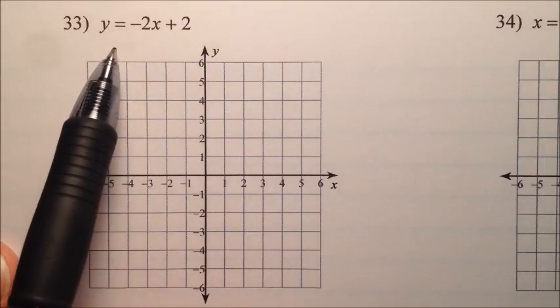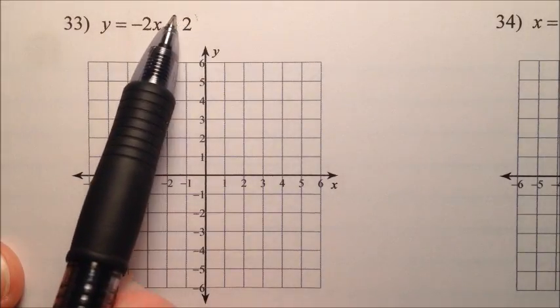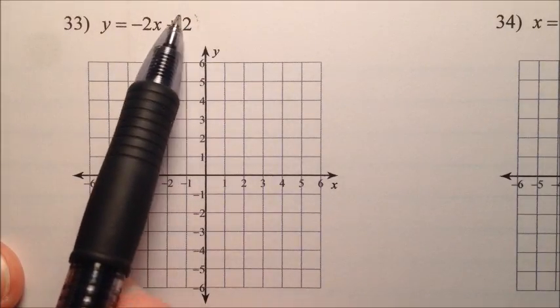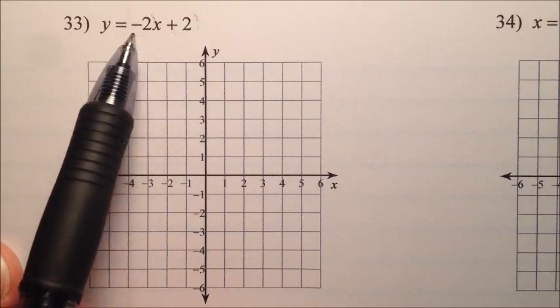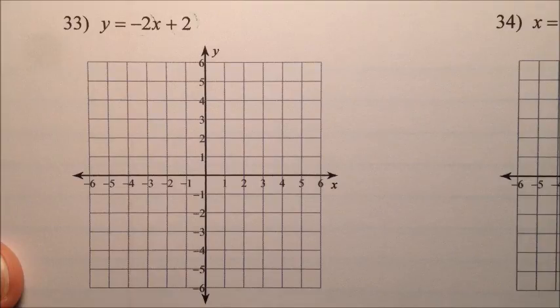In order to graph, we need to know a couple of things. We need to know a starting point, or what we call a y-intercept, so we can plot a point there. And then we can use the slope to propagate more points and then draw our line.